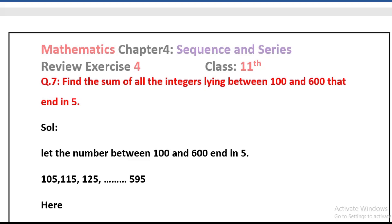In this lecture, I will solve review exercise number 4, question number 7, that is most relevant for paper's point of view. So let's start. Find the sum of all the integers lying between 100 and 600 that end in 5.